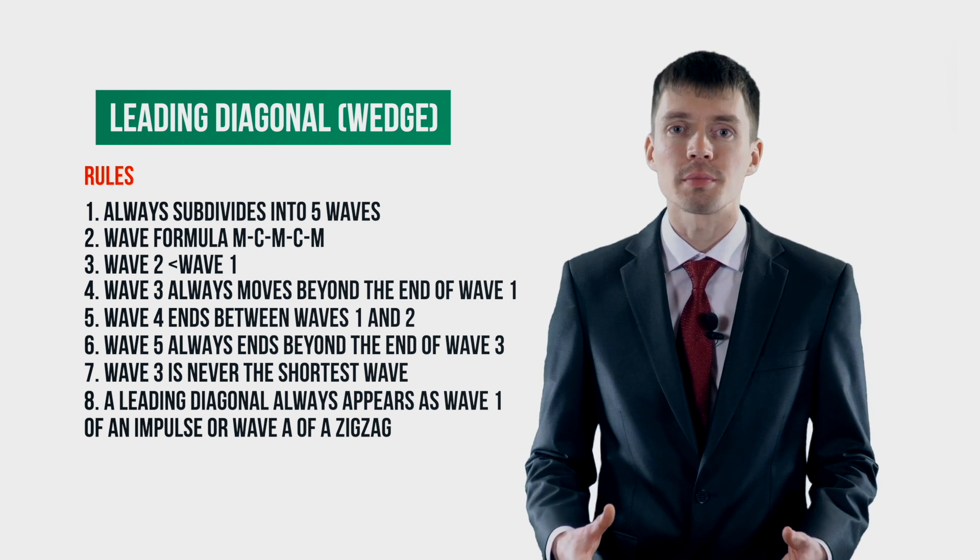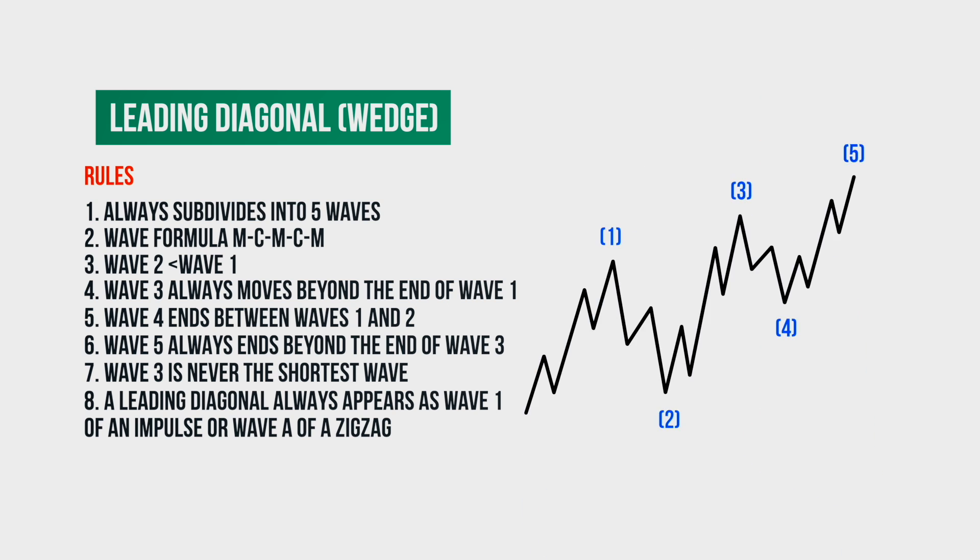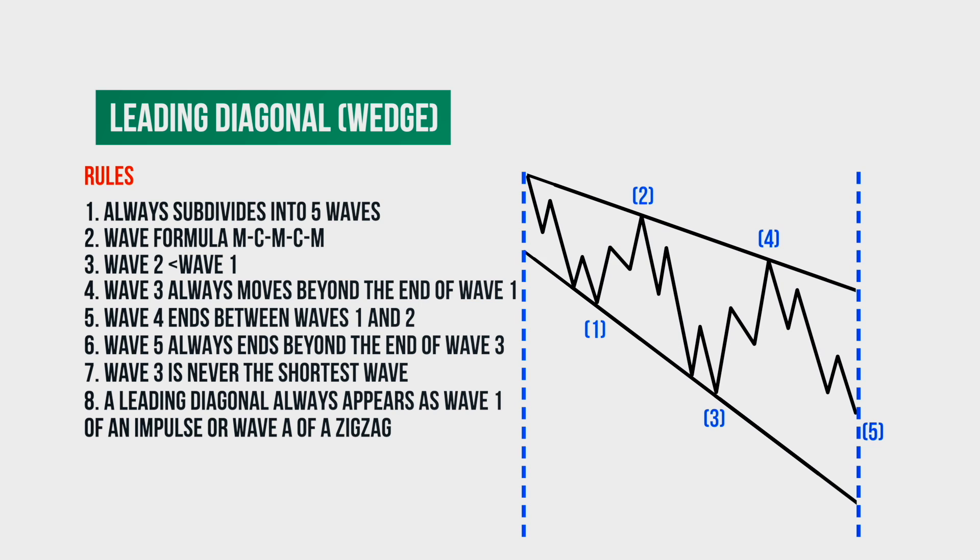And now I would like to show the leading diagonal on the chart. Traders have come up with a convenient designation for the leading diagonal. That is, through the vertices of waves one and three and through the vertices two and four, the generating lines are drawn from the beginning to the end of the model. The same is done with the downward model.